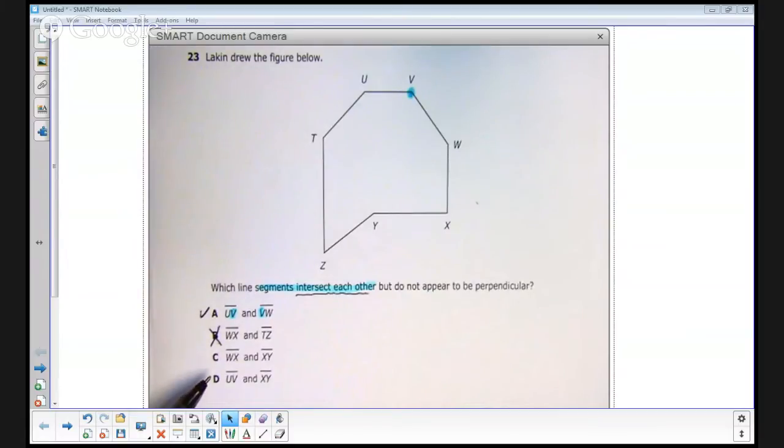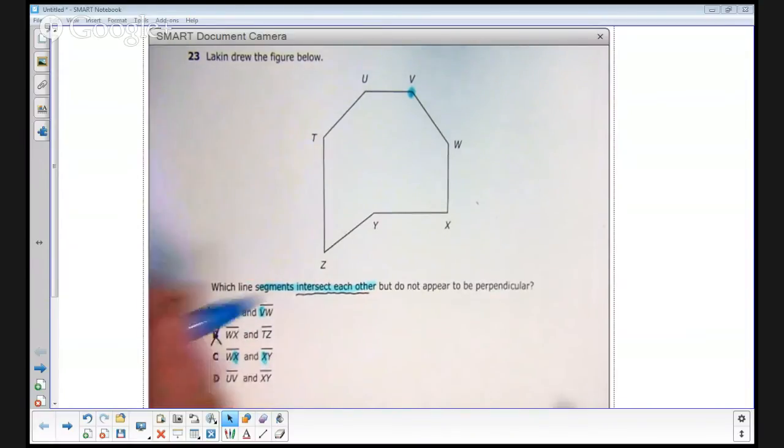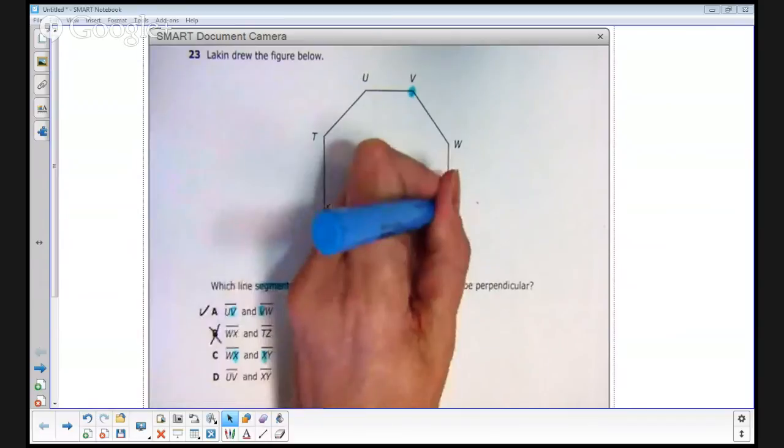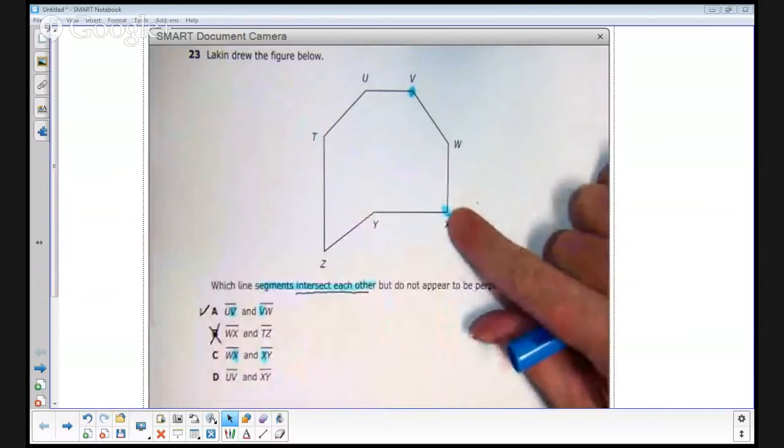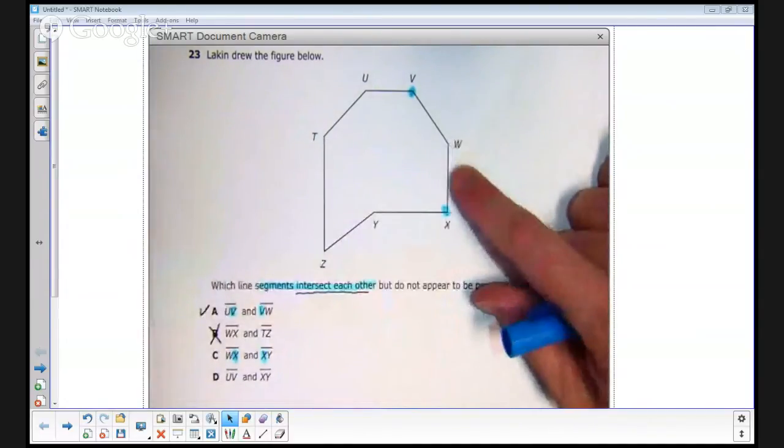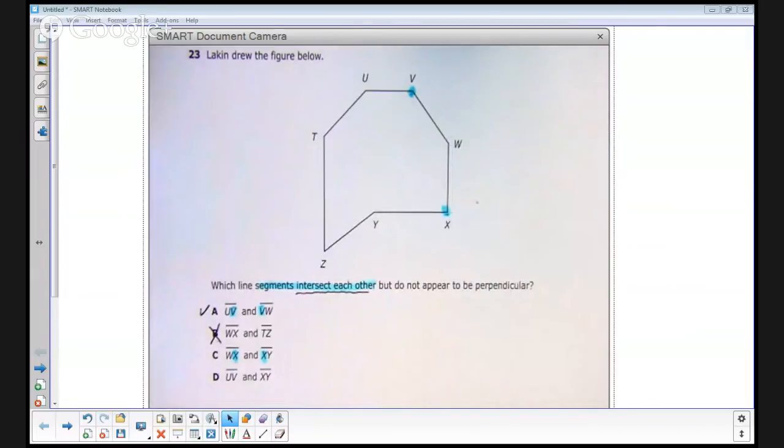Answer choice C gives us these two line segments, line segment WX and XY. Again, I notice that the letter X appears in both names, WX and XY. This point is that point of intersection for those two line segments. So answer choice C, we're going to keep that one for now because they do intersect.